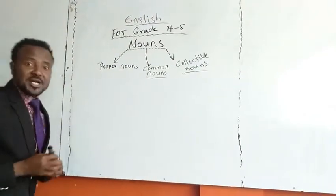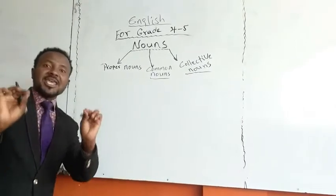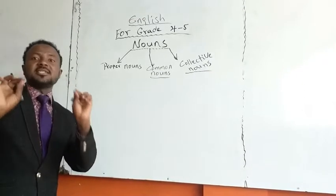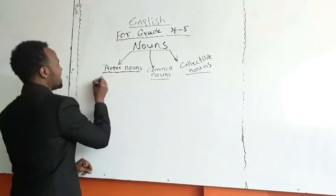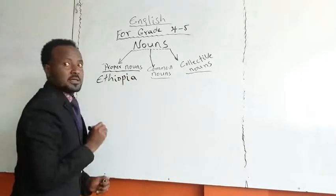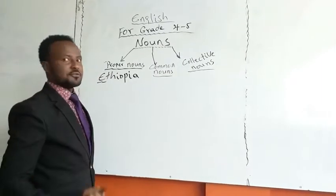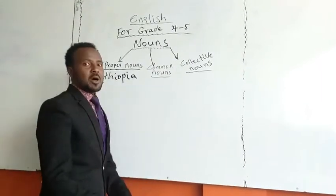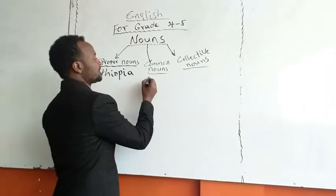When we say proper noun, the particular name, we write it with the first letter capital. For example, Ethiopia. Look, always capital letter at the beginning of the proper noun. Common noun is always written in small letter, for example, student.